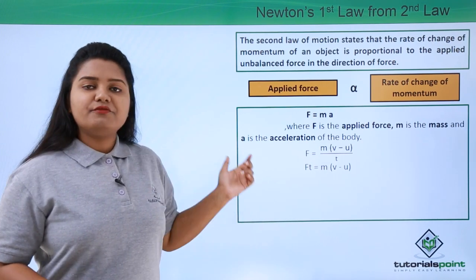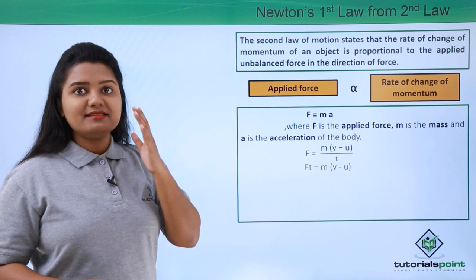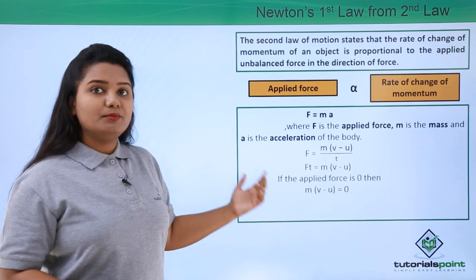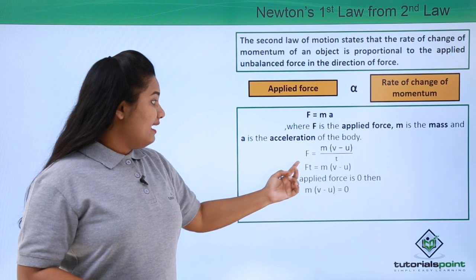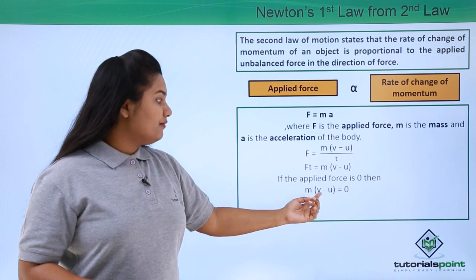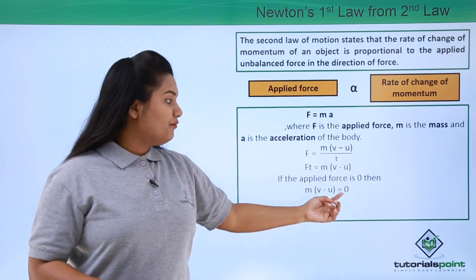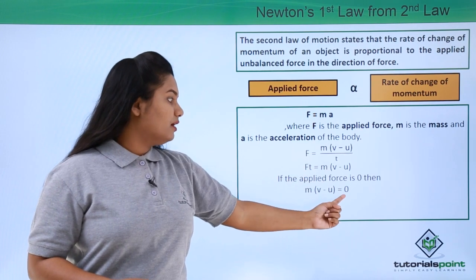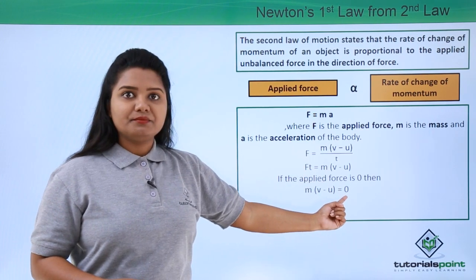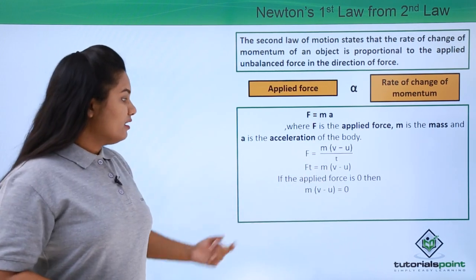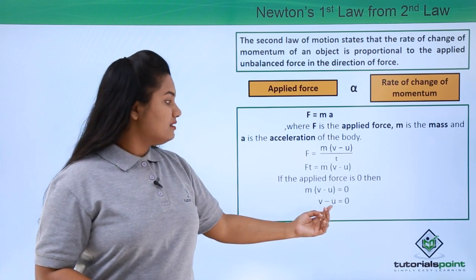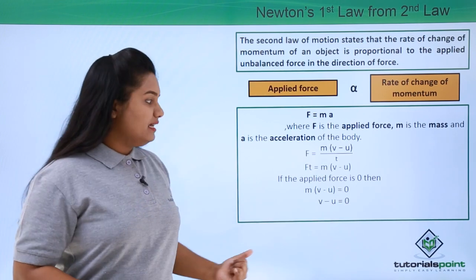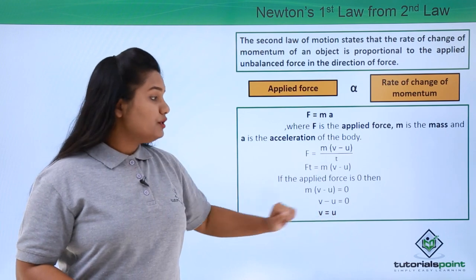Now suppose the force acting on the body is zero — there is no force acting on the body. When F equals zero, then m into (v minus u) will also be equal to zero, since zero into t becomes zero. So v minus u is also equal to zero, which means that v is equal to u.